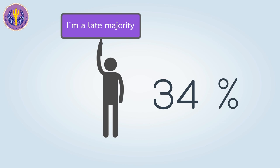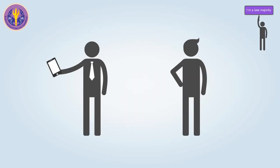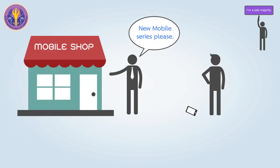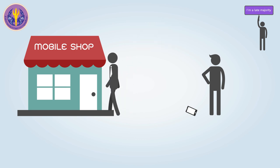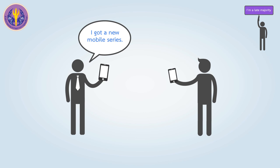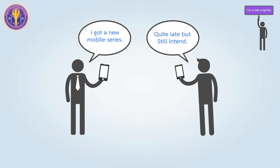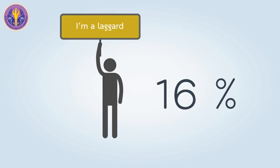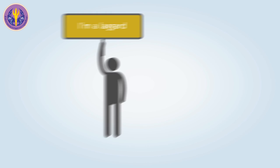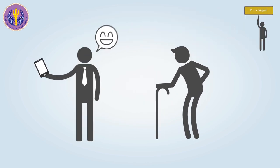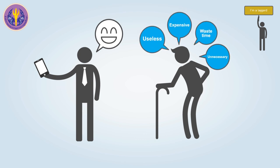The fourth group is the Late Majority, which is also about 34%. This group changes mainly due to social pressure or because procrastination is no longer an option — they start to use it only when pushed. The fifth group is the Laggards, which is about 16%. This is the group that has been using the same technology and does not want to change. If they don't have to learn about it, they won't change.